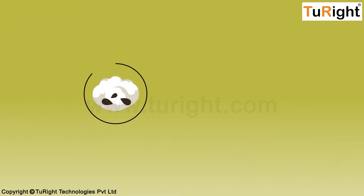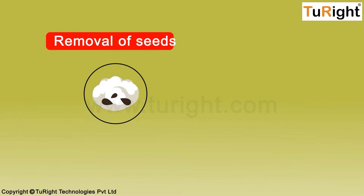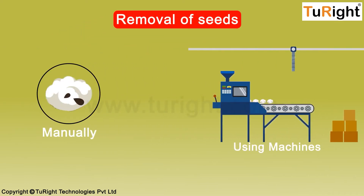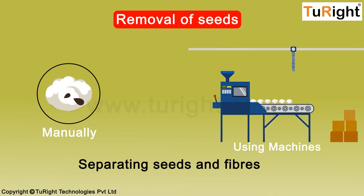These bolls are collected and drawn into yarns. But first, we need to separate the seeds from the soft fluffy part. That can be carried out either manually or, these days, mostly with the use of machines. The process of separating the seeds from the fibers is called ginning.